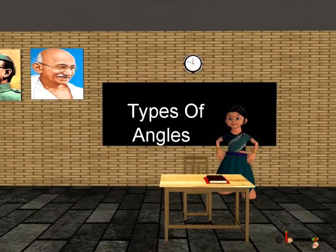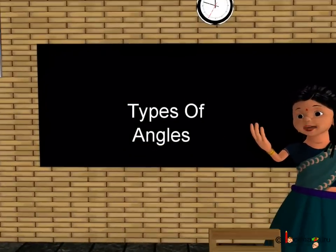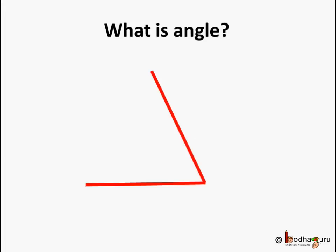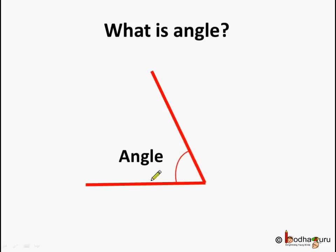Good morning children. Now we shall learn about different types of angles. What is an angle? We know, as we saw in the last class, when two straight lines meet at a point, they form an angle. This is the angle between these two straight lines which meet at this point. The angle is the amount of turn between the two straight lines which meet at a point.